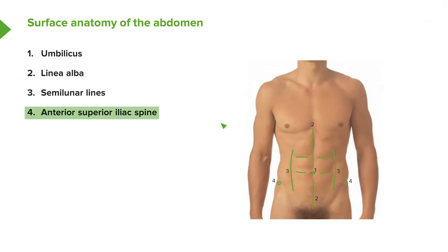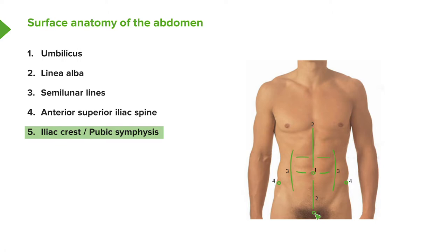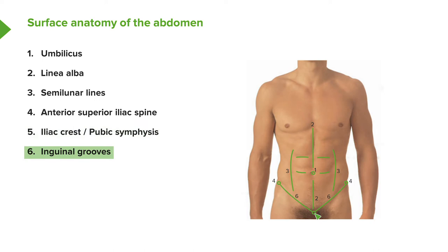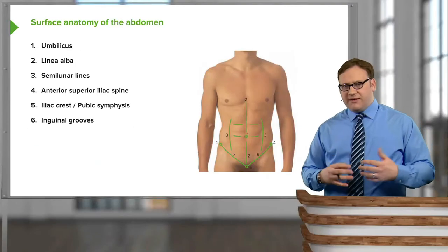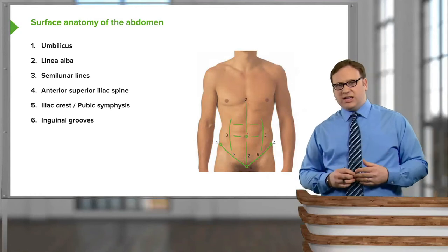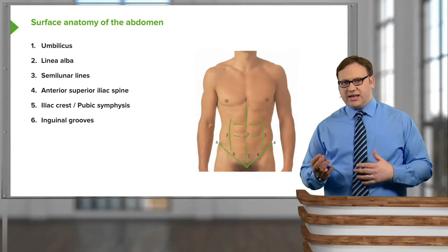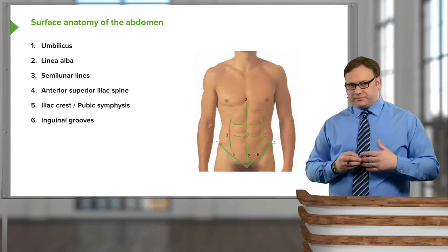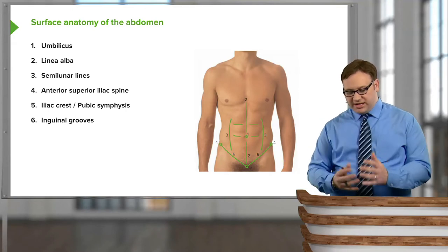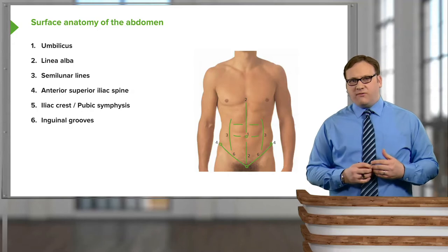From the anterior superior iliac spine, we have the iliac crest and the pubic symphysis in the midline. Running down, we see a slight depression indicating the inguinal ligament — our inguinal groove. These surface landmarks on the abdomen are really important in helping us observe if there's any scarring or damage that's occurred to this region, but this is a nice normal anterior aspect of the abdomen.